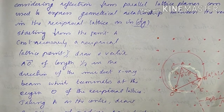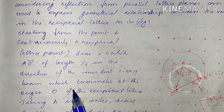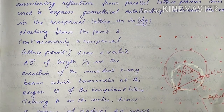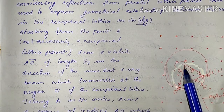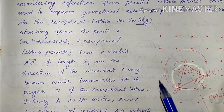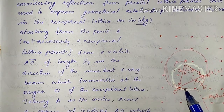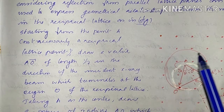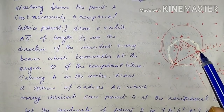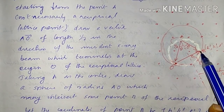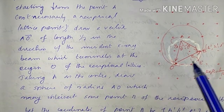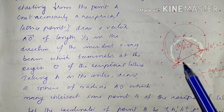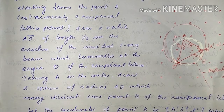Taking A as the center, we draw a sphere with radius equal to AO. This sphere may intersect some lattice points in the reciprocal lattice. Suppose B is the reciprocal lattice point that lies on this sphere of radius AO, which is equal to 1/λ, where λ is the wavelength of the incident ray.